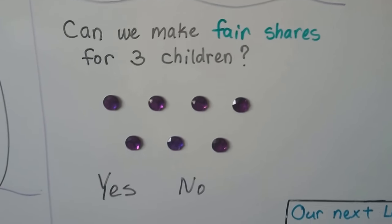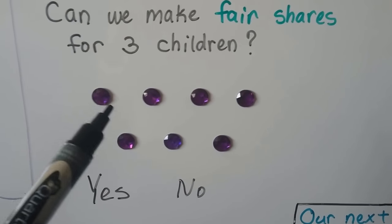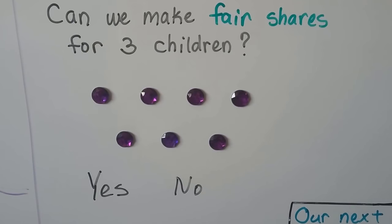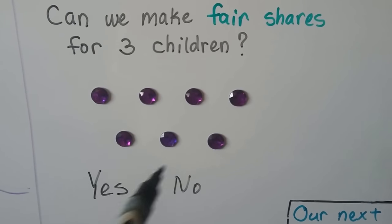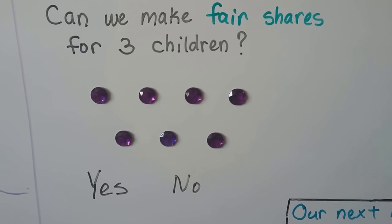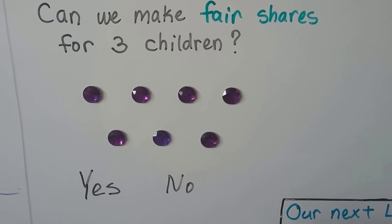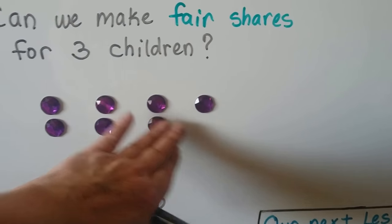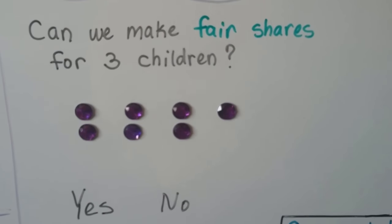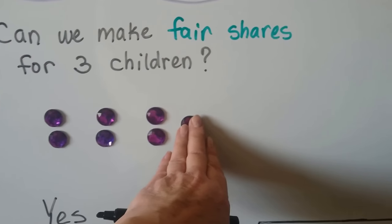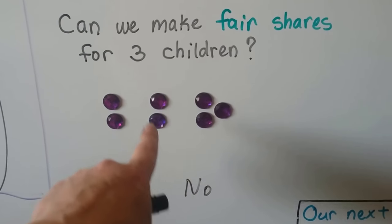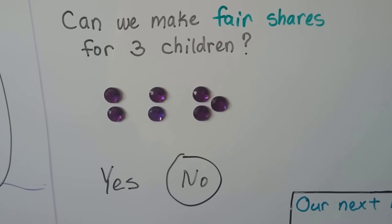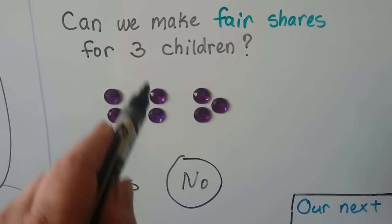Can we make fair shares for three children? We have seven gems and three children. Can we separate these evenly so everyone gets a fair share? If we give one child two, another child two, and another child two, there's going to be one left over. If we give it to somebody, then they have three and the other children have two — so no, those aren't fair shares. We can't make fair shares with seven gems for three children.